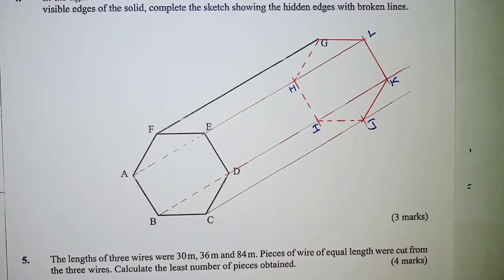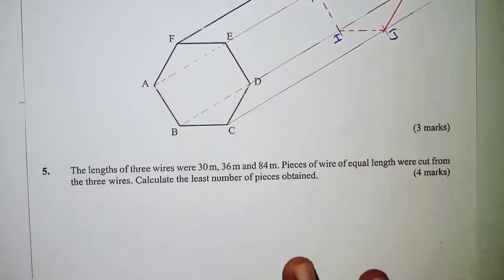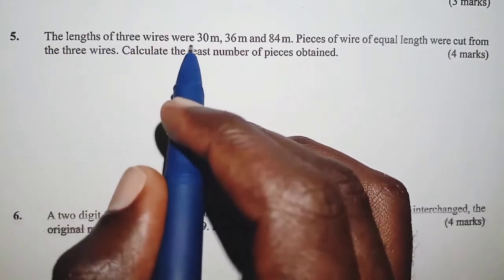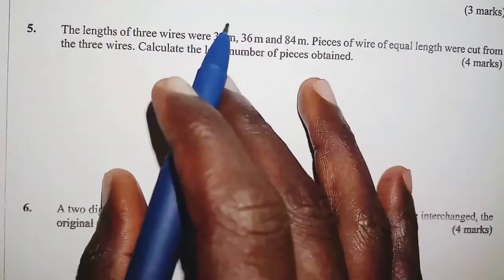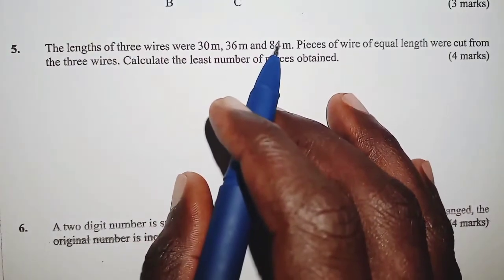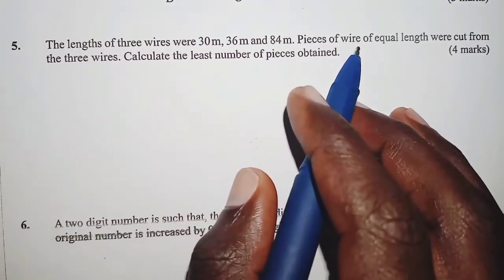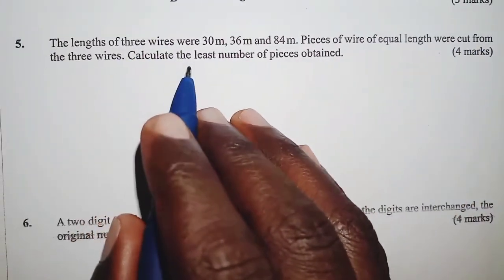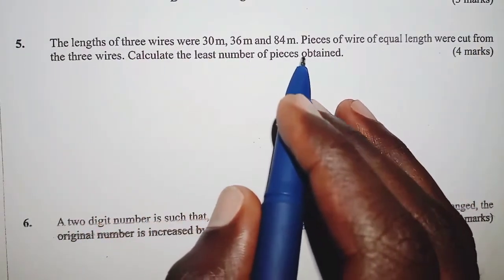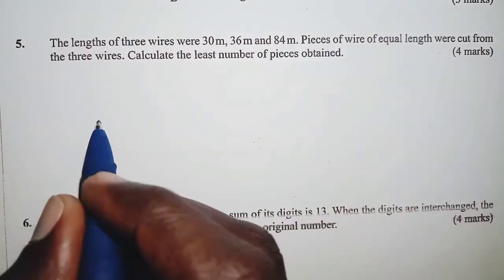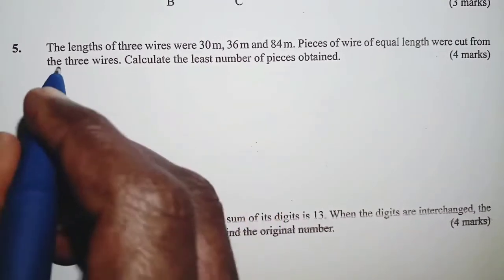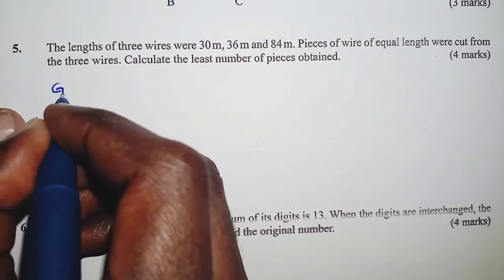Without wasting time further, let's move to question number 5. For question number 5, the lengths of three wires were 30 meters, 36 meters, and 84 meters. Pieces of wire of equal lengths were cut from the three wires. Calculate the least number of pieces obtained. In order to calculate the number of pieces obtained, the first thing we'll get the GCD.